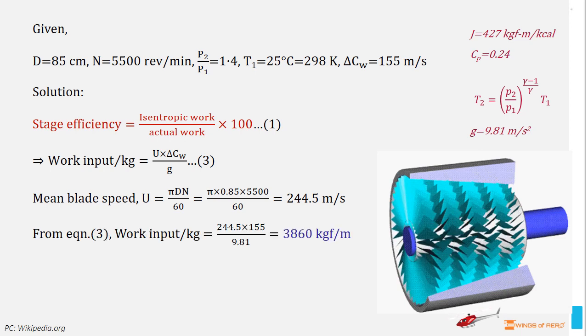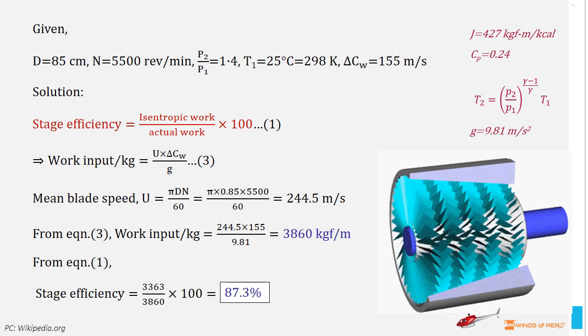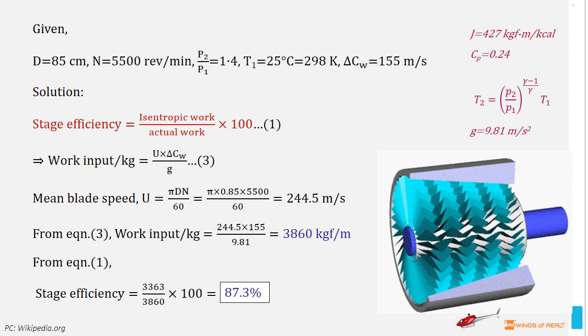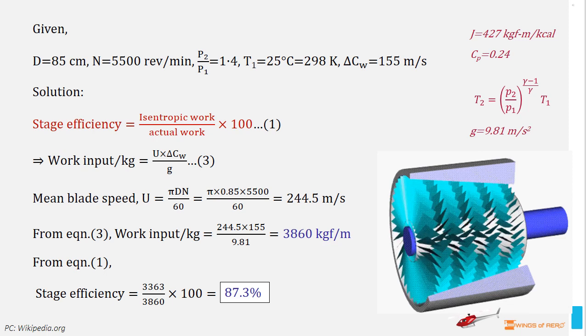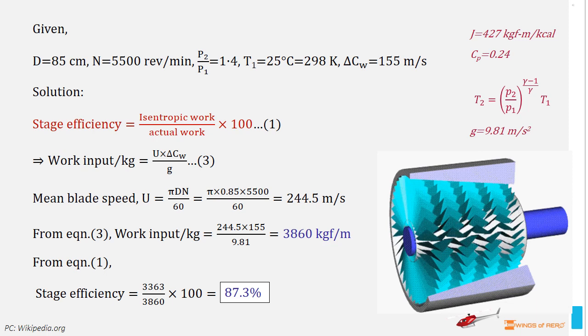Solving equation 3 with appropriate values, we have actual work is 3860 kilogram force per meter. Now, we can find out the stage efficiency. Substitute the values in equation number 1 and we get the required stage efficiency is 87.3 percent.